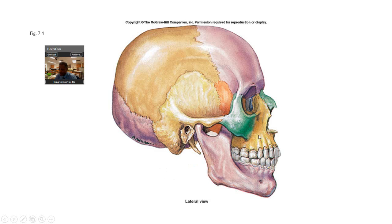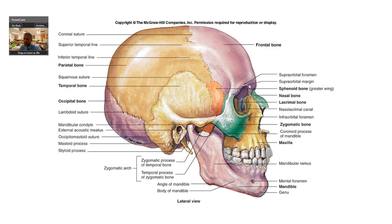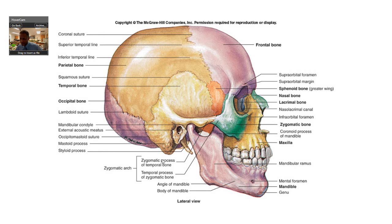Here's your nasal bone and maxillary bone. The squamous part of the temporal bone is flat — remember squamous cells. I mentioned the zygomatic process of the temporal bone. This is the temporal process of the zygomatic bone — they're kind of switched. The zygomatic process of the temporal bone and the temporal process of the zygomatic bone collectively make what's called the zygomatic arch.